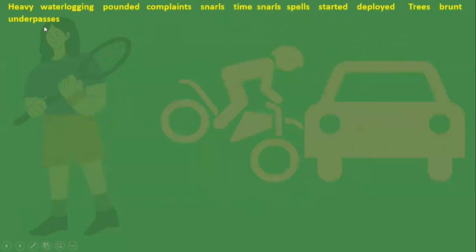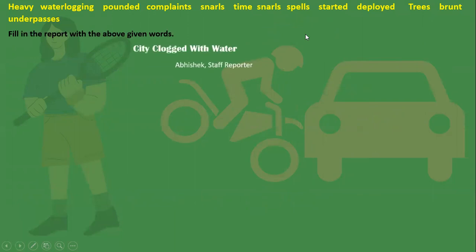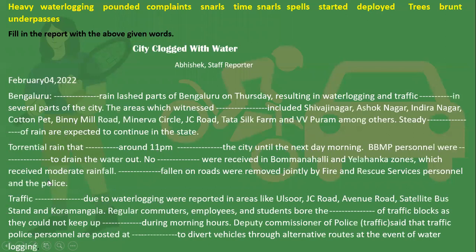Now, a few words have been given for a worksheet exercise. The title is 'City Clogged with Water,' byline by Abhishek, Staff Reporter, followed by month, date, and year. You need to fill in the blanks in the report with the right words selected from the given highlighted words. Once you complete this worksheet, put your answers in the comment box so the answers can be checked.